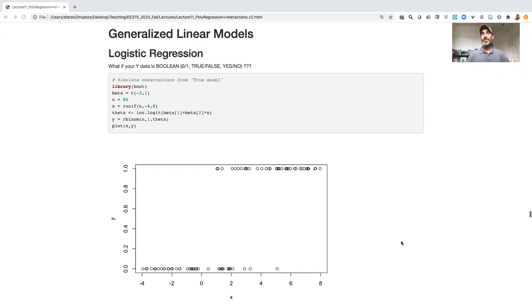Probably the best way to explain this is with an example. One of the most common forms of generalized linear models that gets the most use that you may have seen already is the idea of logistic regression.